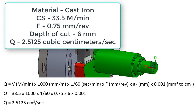Next multiply by the feed rate in millimeters per revolution and the depth of cut in millimeters. Finally, multiply by 0.001 to convert cubic millimeters to cubic centimeters. The volume material removed is 2.5125 cubic centimeters per second.